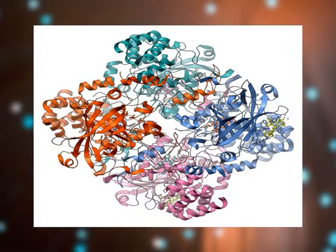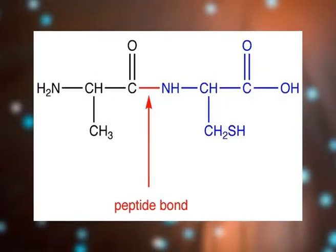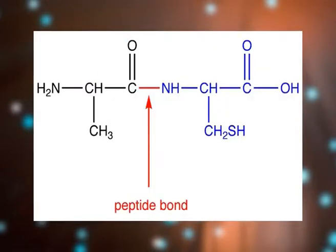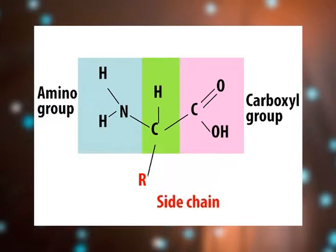Proteins are polymers of some 21 amino acids joined together by peptide bonds. Proteins differ from each other according to the type, number and sequence of amino acids that make up the polypeptide backbone. As a result, they have different molecular structures, nutritional attributes and physiochemical properties.